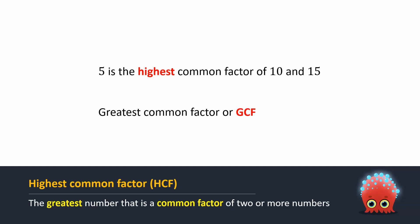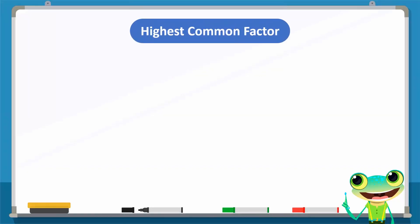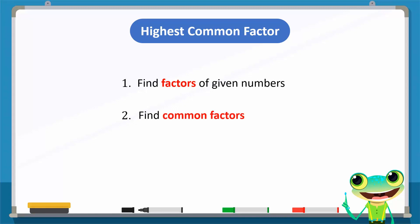We find the HCF of two or more numbers through three steps. In step one, we find all the factors of each given number. In step two, we find the common factors of the given numbers. Lastly, we choose the greatest common factor — that is also the highest common factor, or HCF. Consider an example to illustrate this concept.